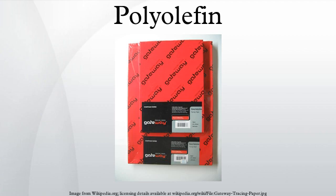Polyolefin elastomers include polyisobutylene, ethylene-propylene rubber, and ethylene-propylene-diene monomer rubber.